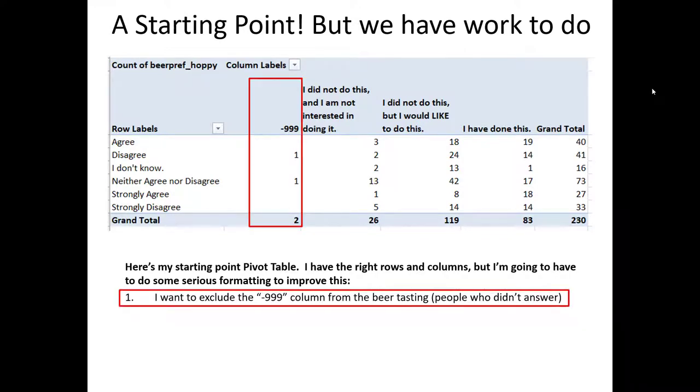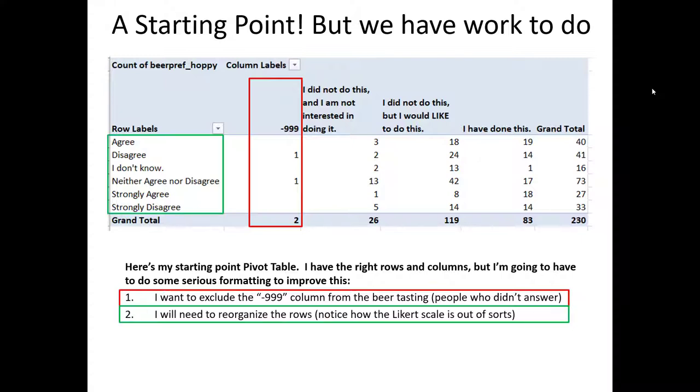First, we're going to want to exclude the negative 999 column. These were the people who didn't answer the question related to a beer tasting. Next, we're going to need to reorganize those rows. By default, the pivot table organized these in alphabetical order. But that doesn't make a lot of sense for us. We have agree, then disagree, then I don't know. That's a little confusing. So we're going to have to rearrange that.